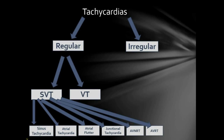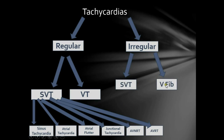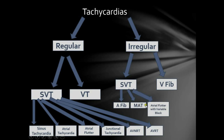Inappropriate sinus tachycardia is a rare condition. Irregular tachycardias are classified into SVTs and ventricular fibrillation. The irregular SVTs are further classified into atrial fibrillation, multifocal atrial tachycardia, and atrial flutter with variable block. Note that these are not all conditions comprising tachycardia, but the commonly encountered ones. Any of these tachycardias could be either sustained or paroxysmal, meaning it comes and goes.